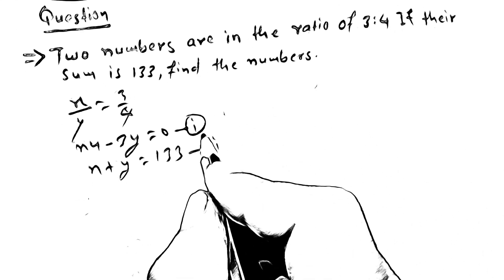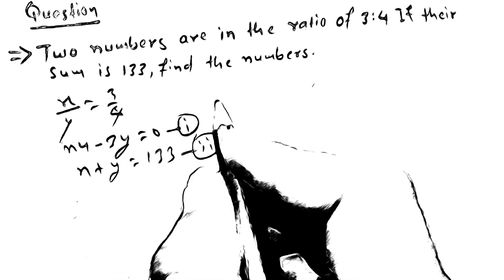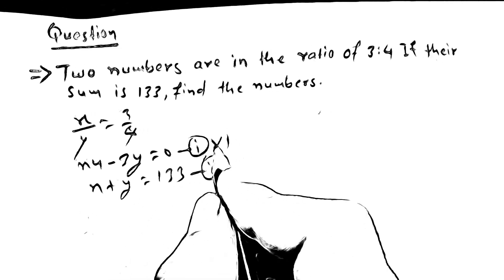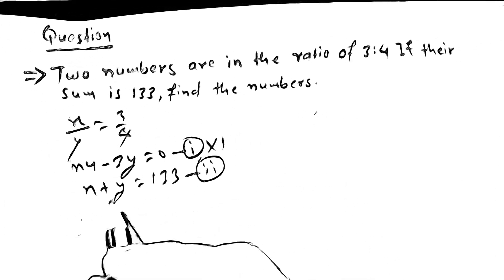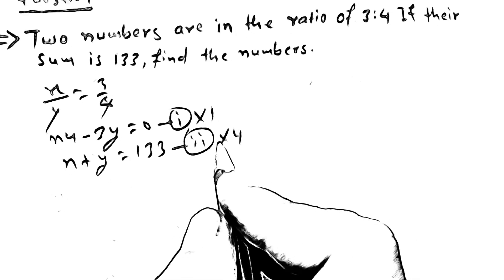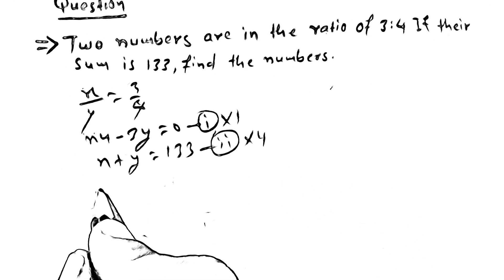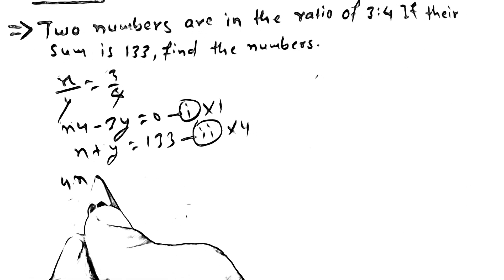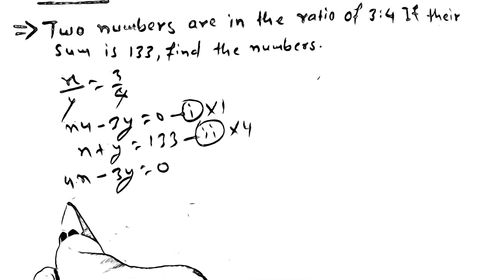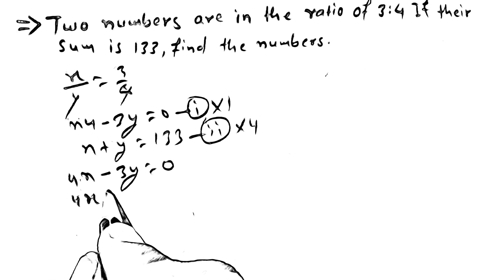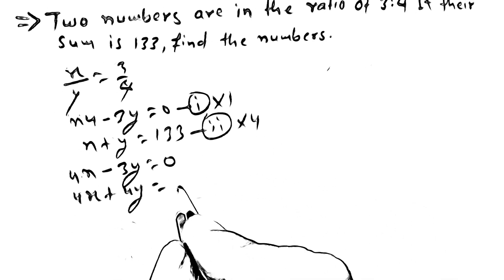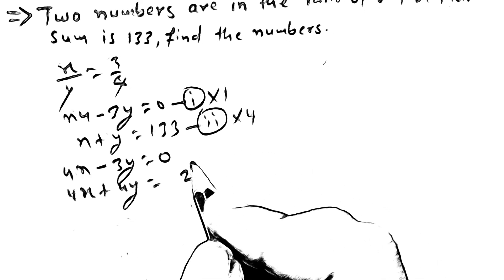We will multiply. Multiply: 4x minus 3y is equal to 0. Then 4x plus 4y is equal to 4 times 133, which gives 4x plus 4y equals 532.